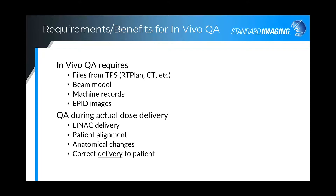Requirements for Adaptivo's in vivo analysis are the portal images, files from your treatment planning system such as the RT plan and planning CT, as well as the pre-configured beam model customized to your linac. Adaptivo also utilizes the EPID images and machine records associated with the delivery. In vivo QA has many benefits, including measurement during the actual delivery, the ability to QA patient alignment during treatment, and monitoring anatomical changes — all of which help ensure accurate dose delivery to the patient.